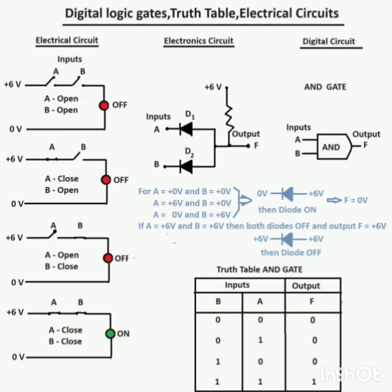If both inputs are at 6 volts — that is, high — then both diodes are OFF and output F is high. A truth table is also given for the two-input AND gate for the given circuits, showing that the output is only high when both inputs are high.